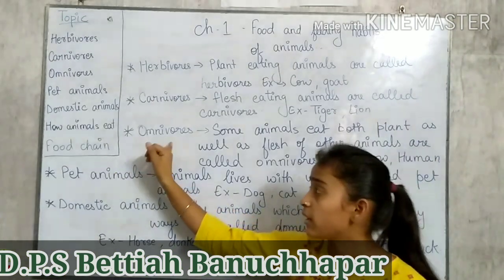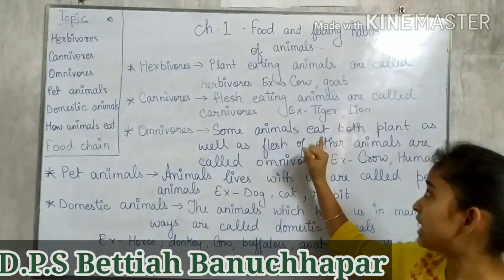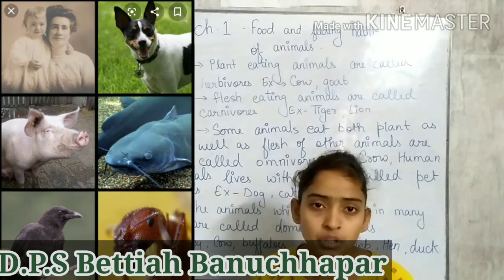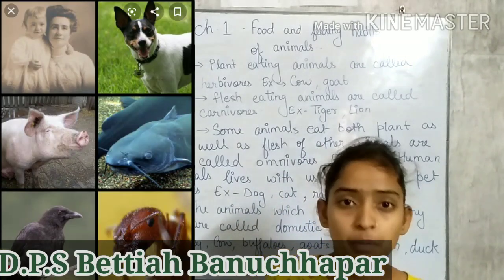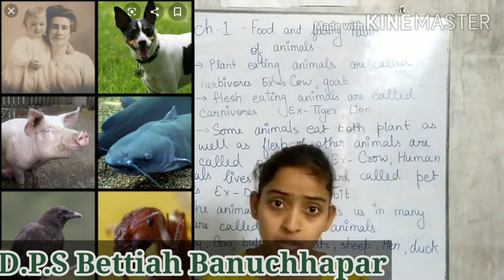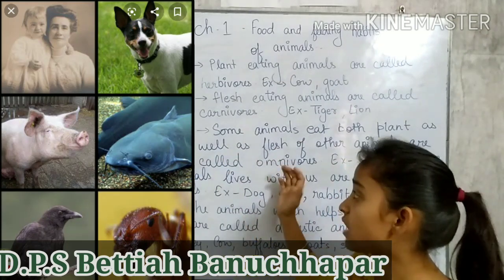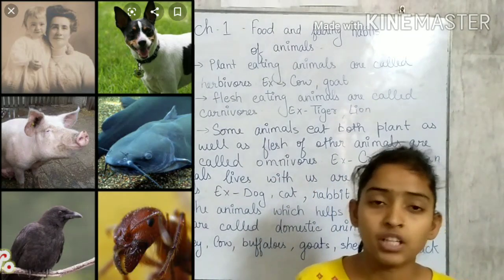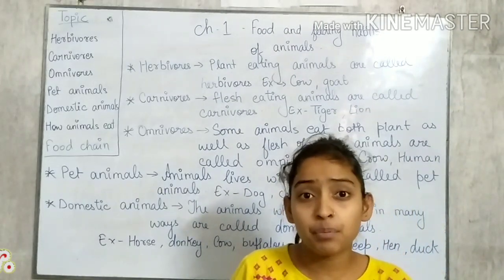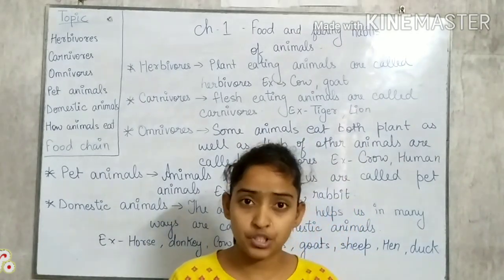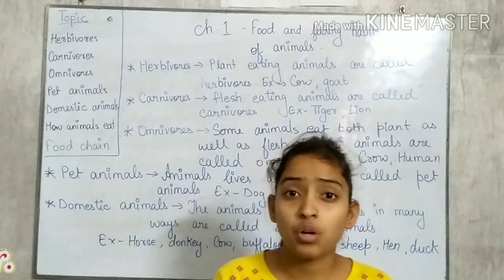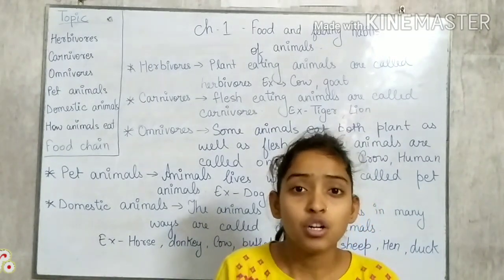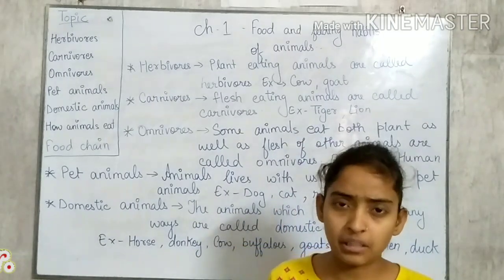What do you mean by Omnivores? Some animals eat both plants as well as flesh. You have heard of animals which eat both plants and flesh of other animals — these animals are known as Omnivores. For example, Crow and Human. We humans prefer both plants such as vegetables and flesh such as meat, fish, or egg.